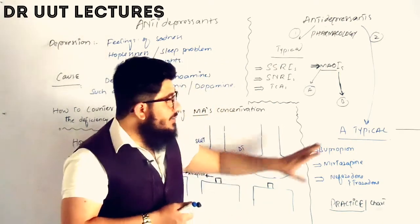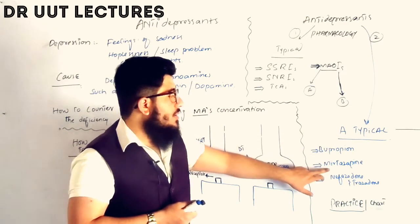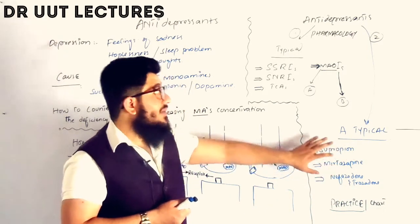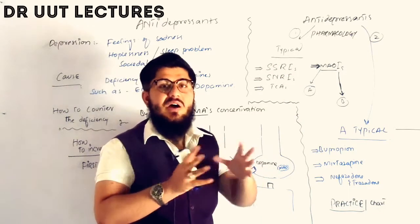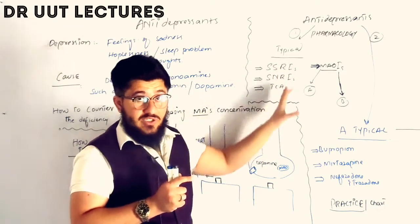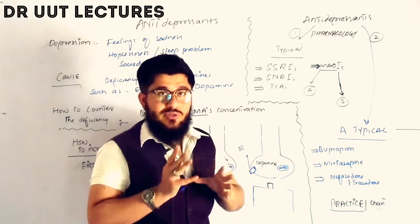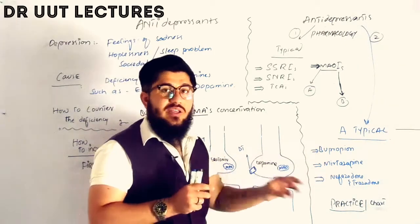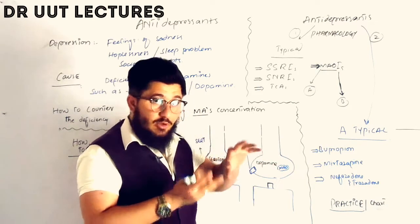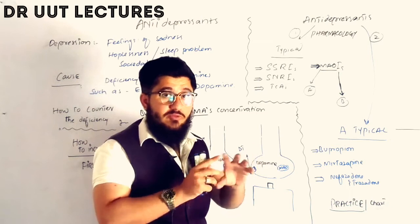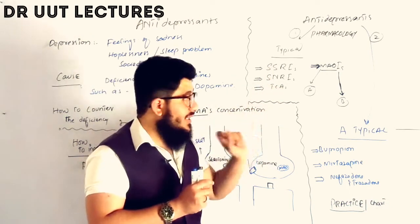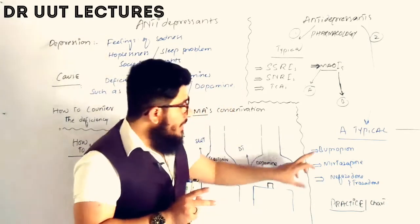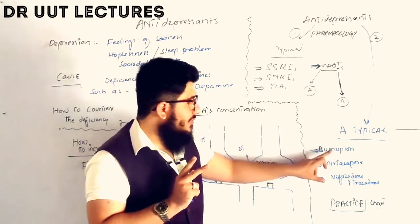Now let's come to atypical antidepressants. Drugs in this class include bupropion, mirtazapine, nefazodone, and trazodone. The drug names for each class can be found in your textbooks. The key points to remember are that atypical antidepressants have a changed side effect profile compared to typical antidepressants and have mixed sites of action — which is why they are classified as atypical.